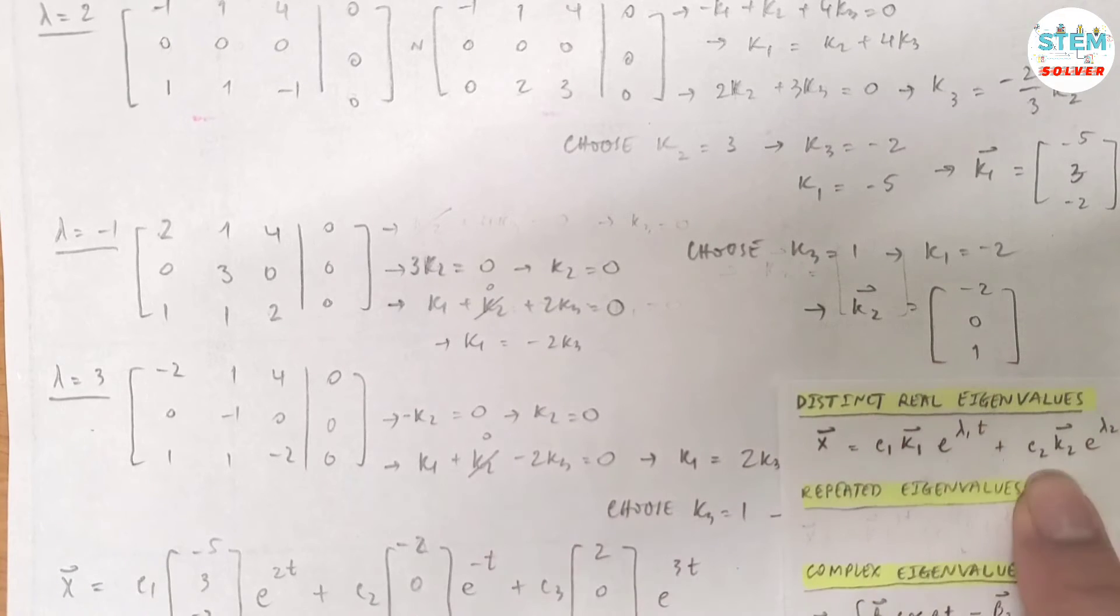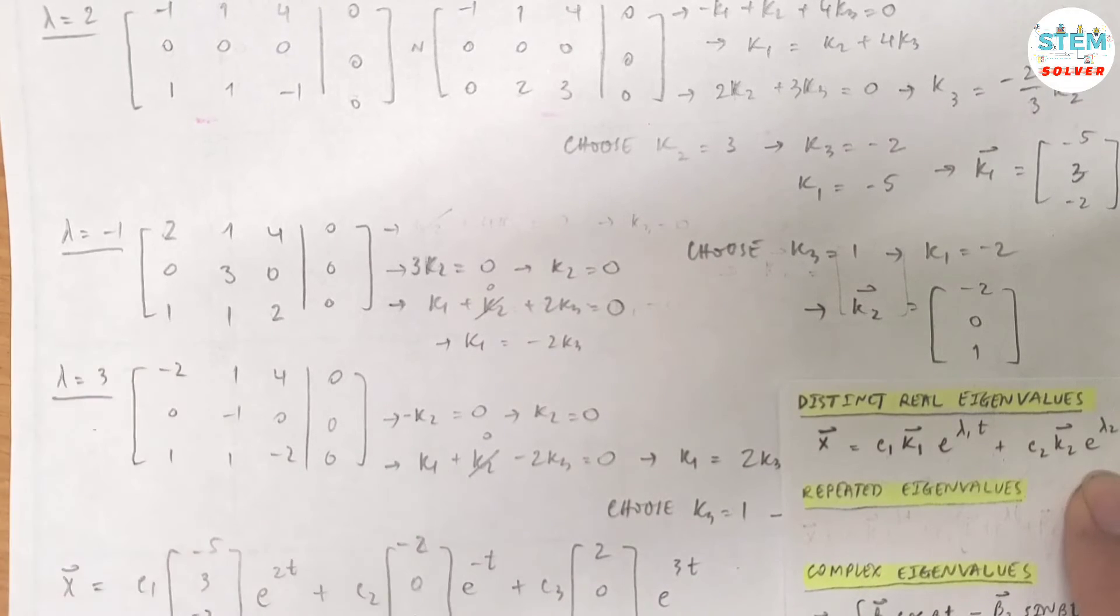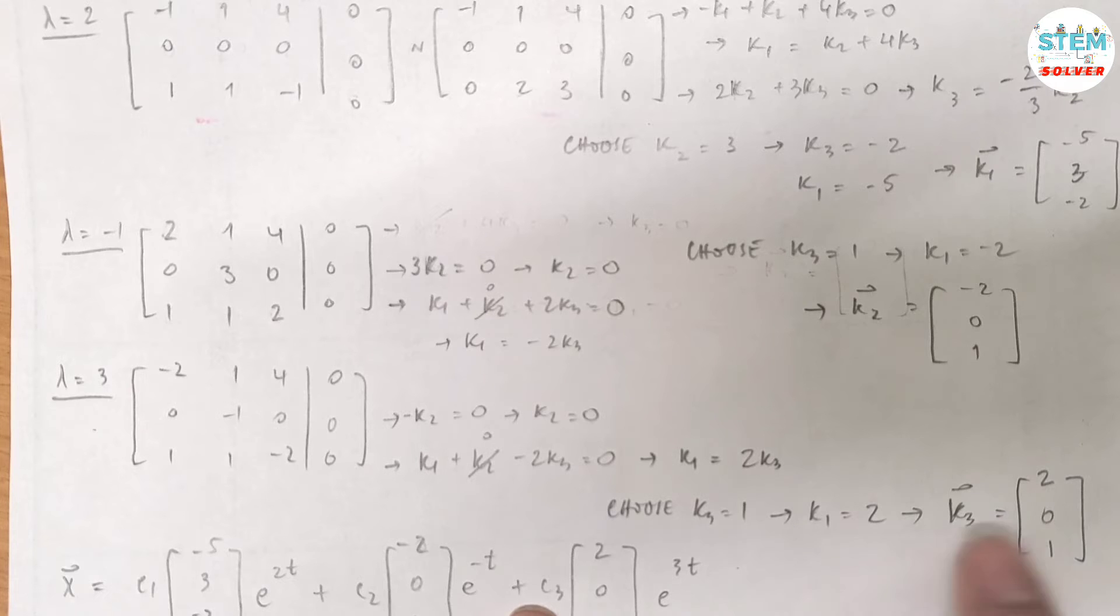Which is e^(-t), plus c₃k₃, which is this, e^(λ₃t) which is e^(3t). You are not done yet because you are given the condition, so you have to solve for c₁, c₂, and c₃.